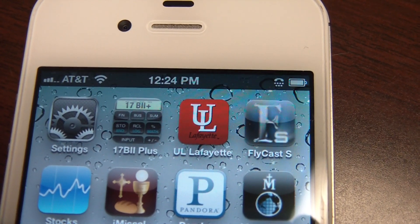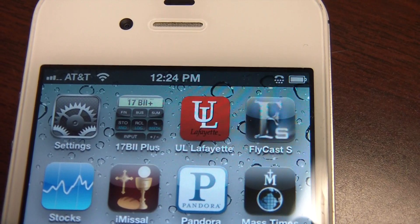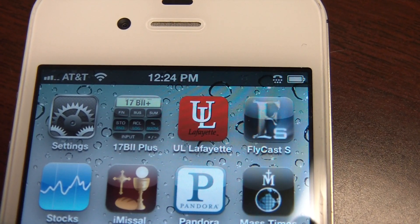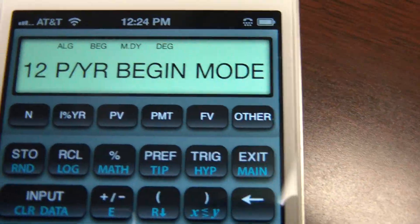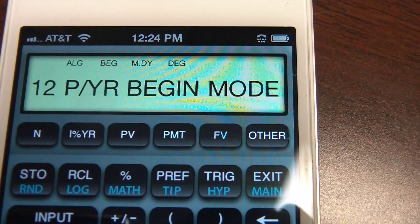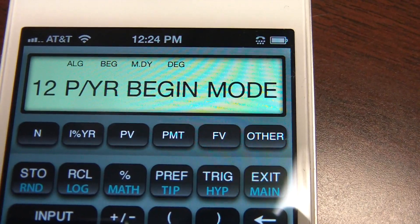This will be a quick demonstration of the 17B2 Plus emulator software produced by RLM Software. When the calculator opens up, it tells you exactly what mode you're in. This is set at 12 payments a year.